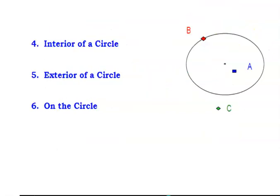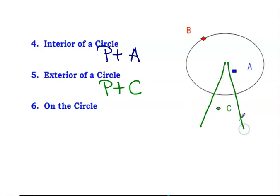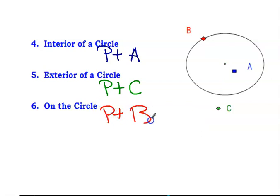We're going to talk a lot about inside, outside, and all those things. The interior of the circle — point A is inside the circle. We're going to be talking about 360 degrees on the inside. The exterior — point C is on the outside. We might have things coming outside of the circle, so we need to understand what the outside is. And the last one is on the circle — that would be point B, actually touching the circle. Those are the three different types.